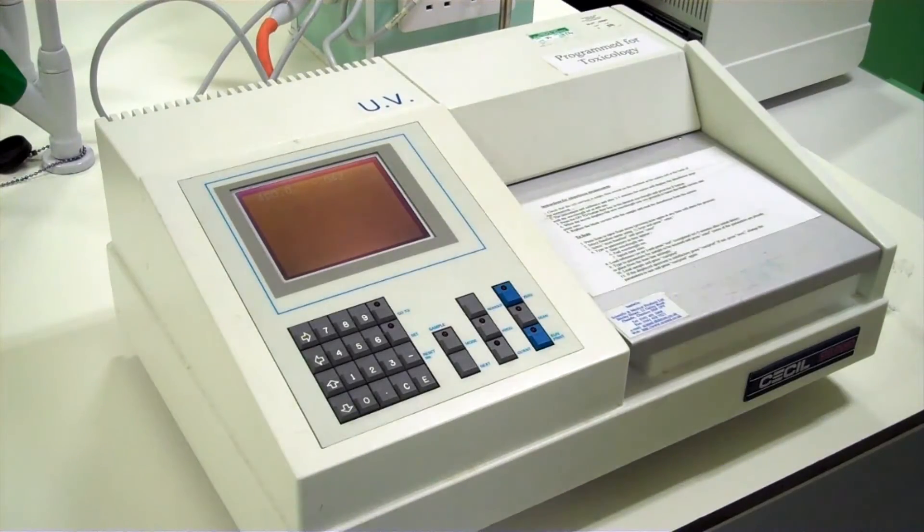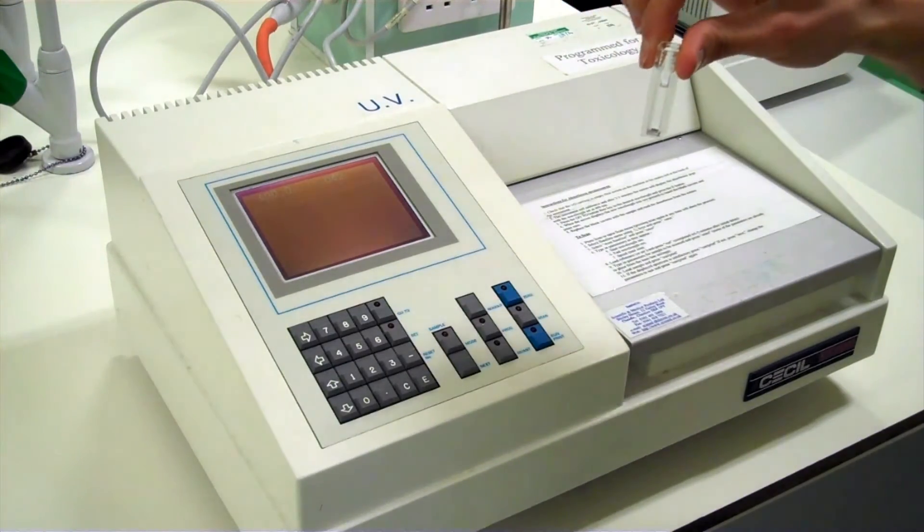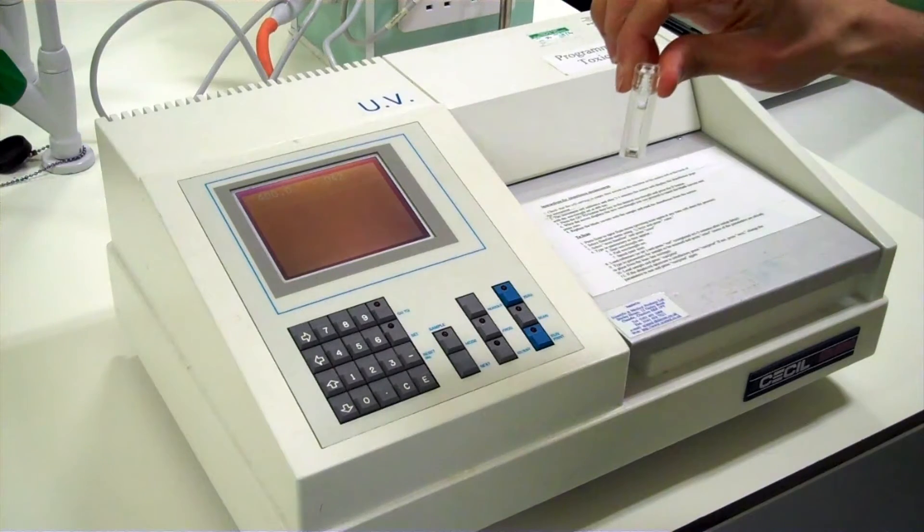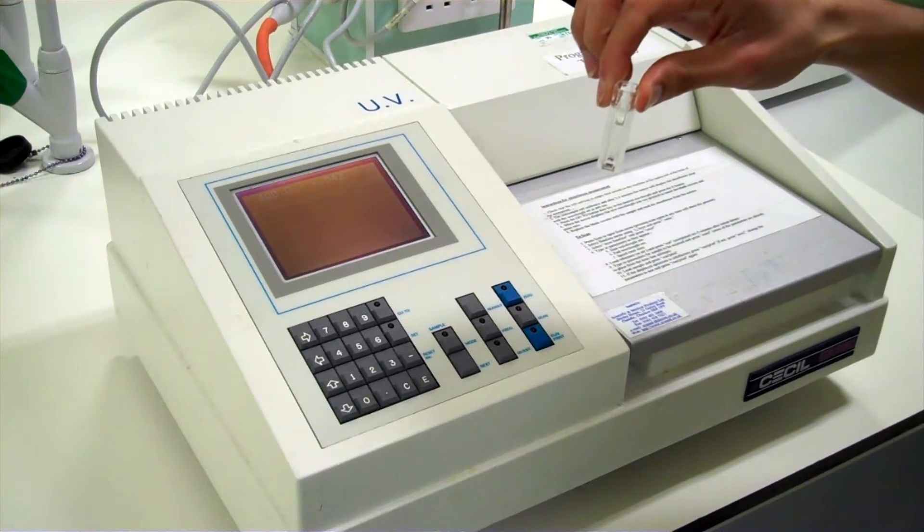To automatically scan a solution at a range of wavelengths we run an automatic scan. We first zero the spectrophotometer using a blank of either water or buffer depending on the solvent we use to dissolve our compound.